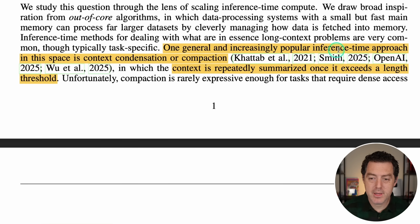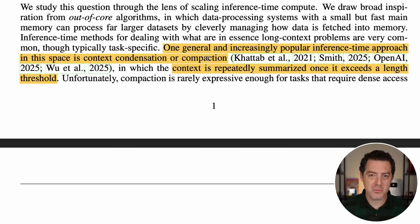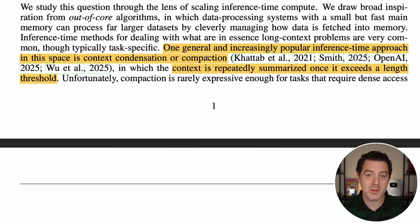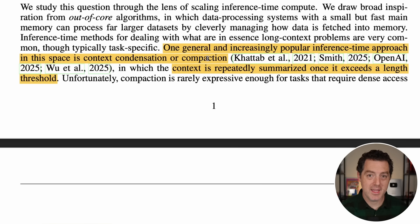One general and increasingly popular inference-time approach is context condensation or compaction. What a lot of providers do is look at the context window and, once it reaches the limit, they use an LLM to summarize and shrink it down. But that is lossy — every time you do that, you're compressing information and losing quality. Imagine you have a really long story, you summarize it, then summarize the summary, again and again. Eventually you lose details. That's essentially what happens with compaction.